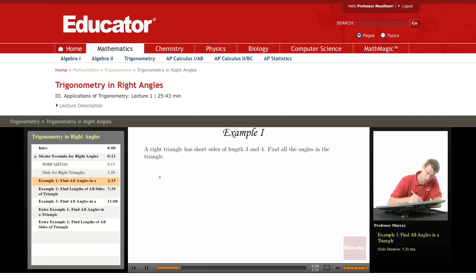So let me draw a triangle here. And we're told that the short sides have length 3 and 4. Of course, one angle is a right angle, so I don't need to worry about that. And I'll call these angles theta, and I'll call this one phi.